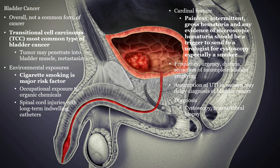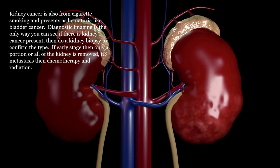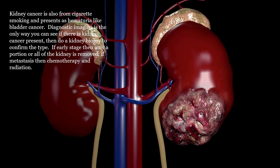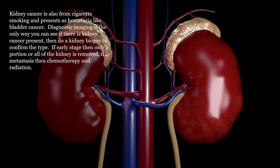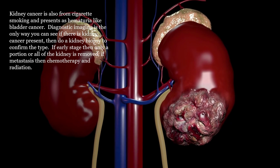Bladder cancer is from smoking cigarettes and can present with gross or macroscopic hematuria. This should be further investigated and a cystoscopy planned, as early detection means preservation of the bladder. Loss of the bladder will result in either a new bladder made from GI tissue or a urostomy being made for urine to exit the body. The most common type of bladder cancer is transitional cell carcinoma, and you need to know this for the examination. Kidney cancer is also from cigarette smoking and presents as hematuria like bladder cancer. Diagnostic imaging is the only way to see if there is kidney cancer present, then do a kidney biopsy to confirm the type. If early stage, only a portion or all of the kidney is removed. If metastasis, then chemotherapy and radiation.